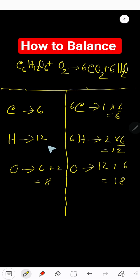Carbon 6 is balanced, hydrogen here 12, here 12. Hydrogen is balanced, but oxygen is not balanced. Here 8, here 18.